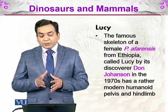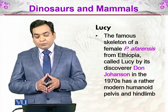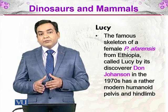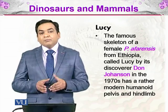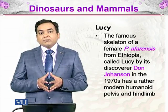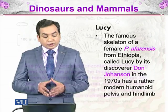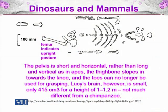The famous skeleton of a female P. afarensis from Ethiopia, called Lucy by discoverer Donald Johanson in the 1970s, had a rather modern humanoid pelvis and hindlimb. The pelvis is short and horizontal rather than long and vertical as in apes. The thigh bone slopes toward the knee, and the toes can no longer be used for grasping, unlike apes who can grasp with their feet.